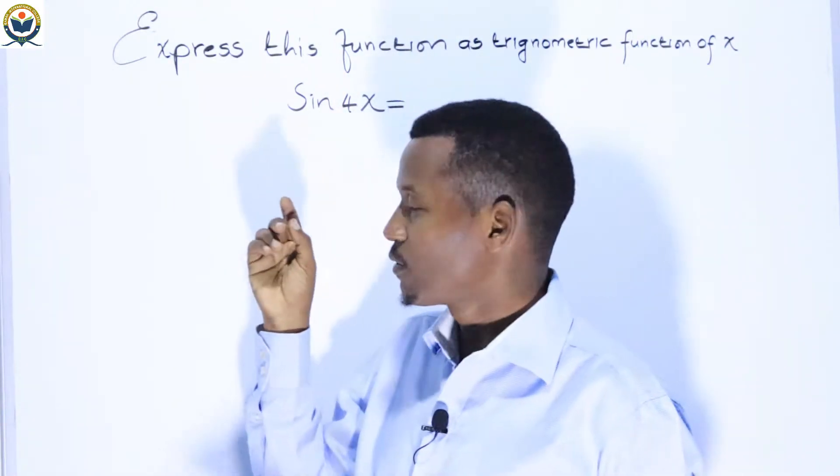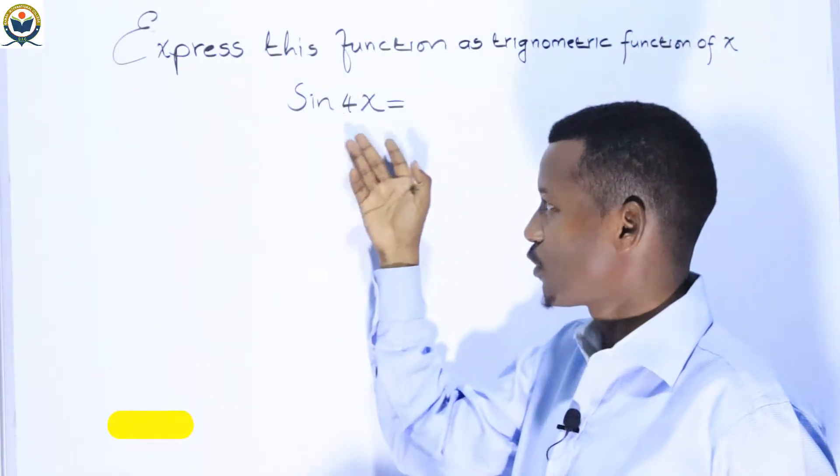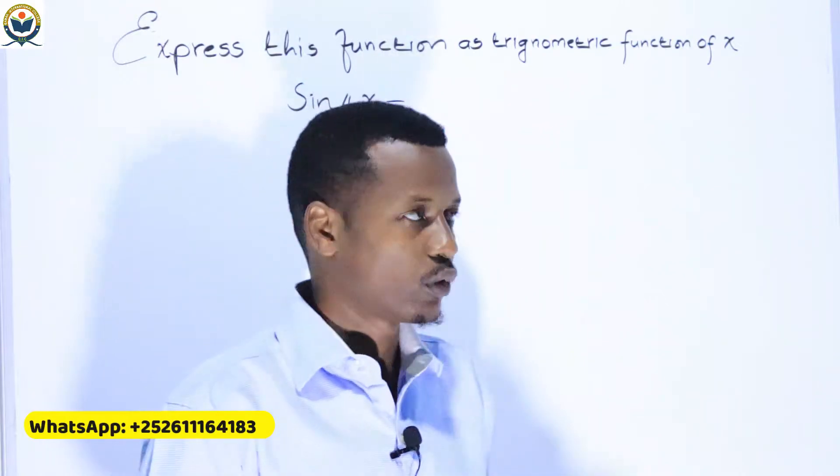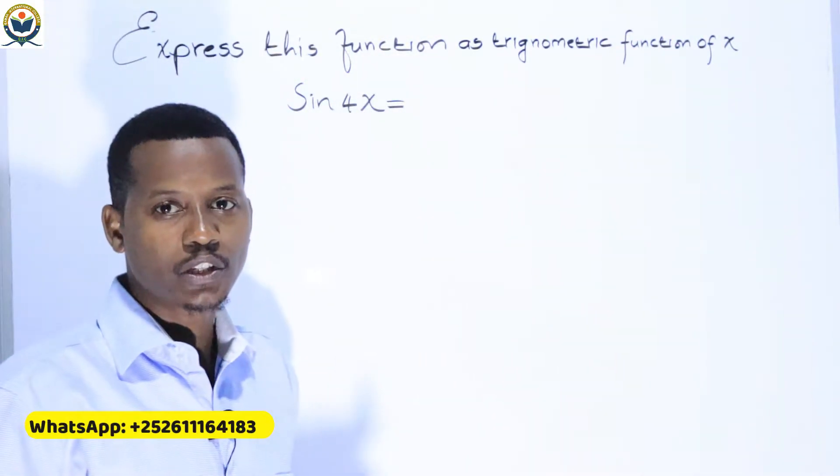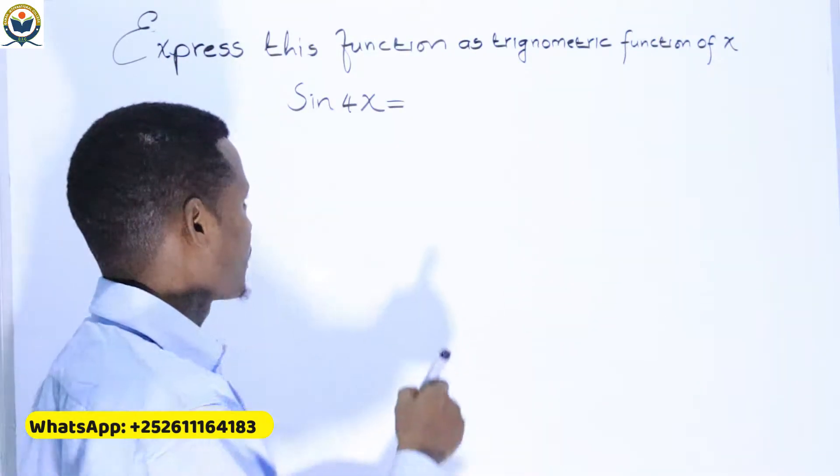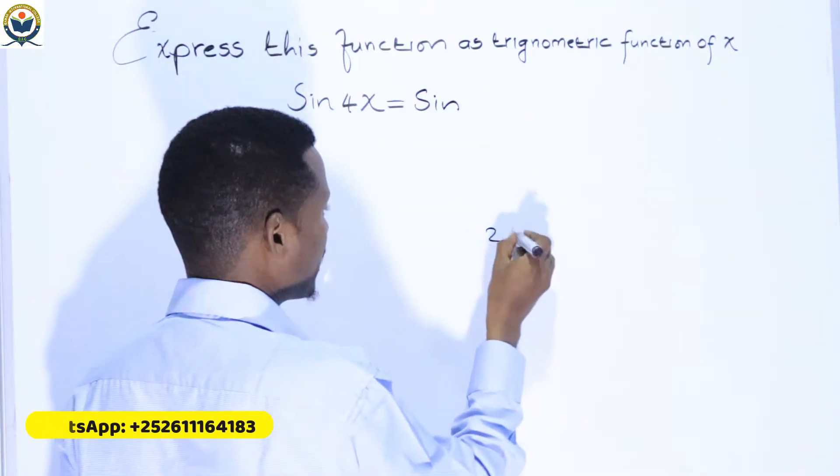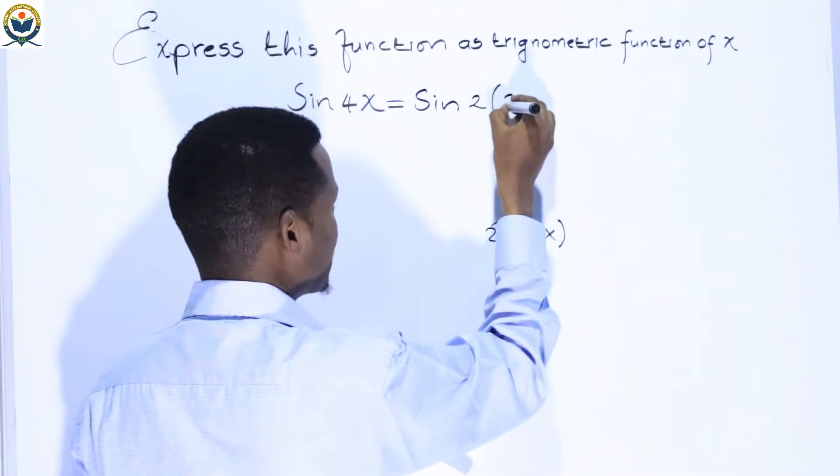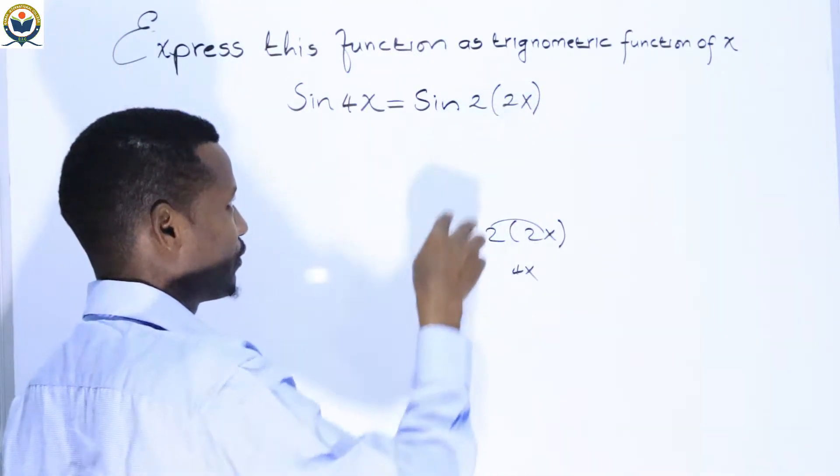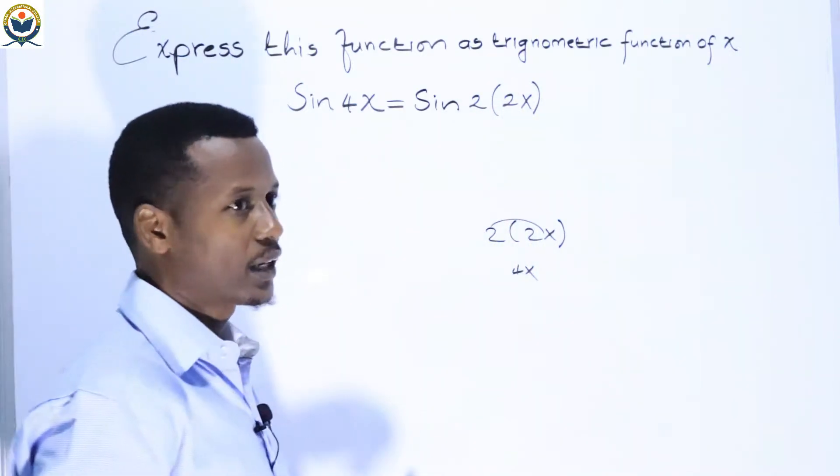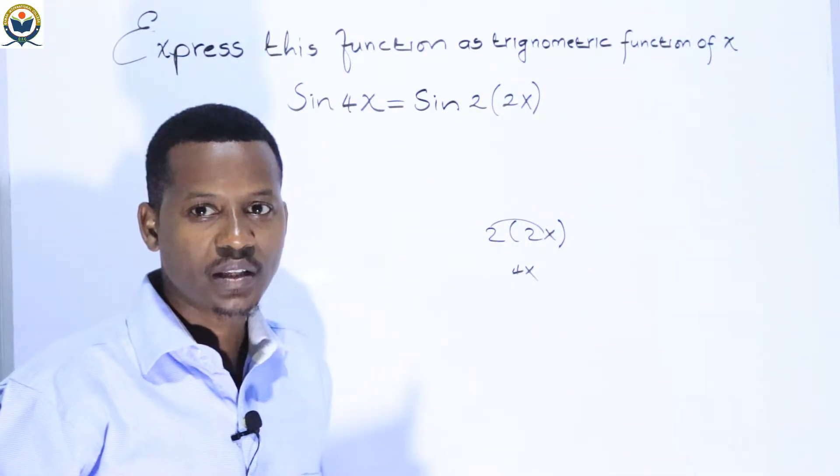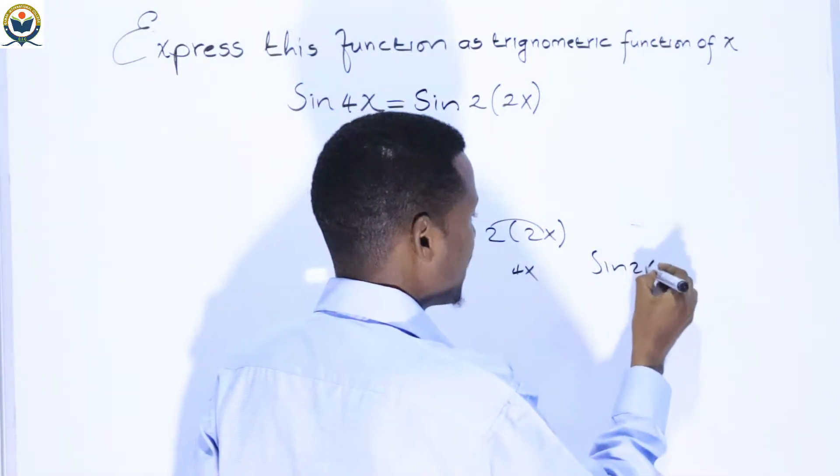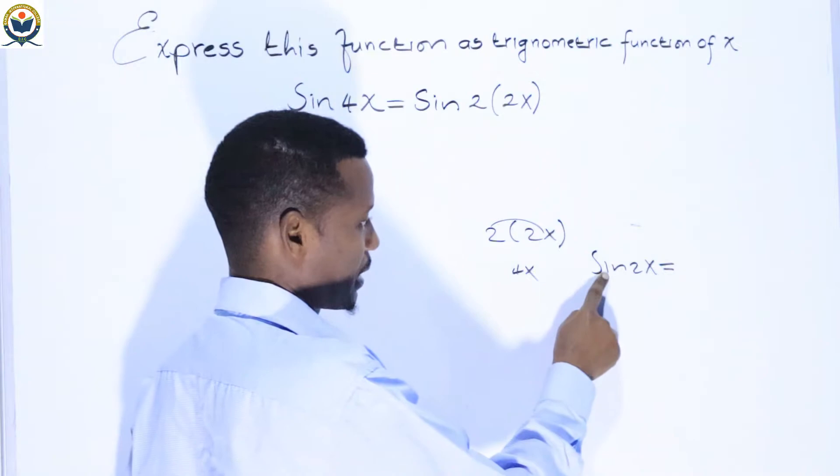We are going to see sin(4x) using double angles. Sin(4x) can be written as sin(2·2x), which means we'll use the double angle formula.